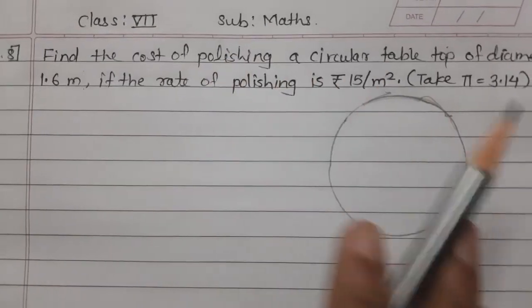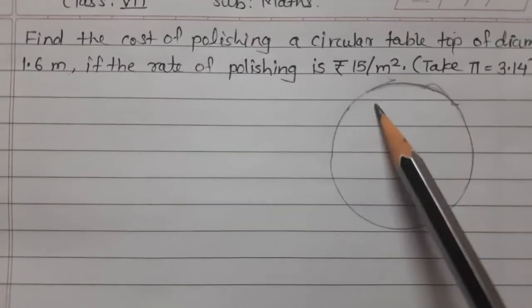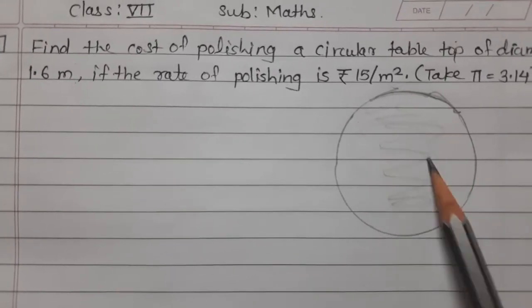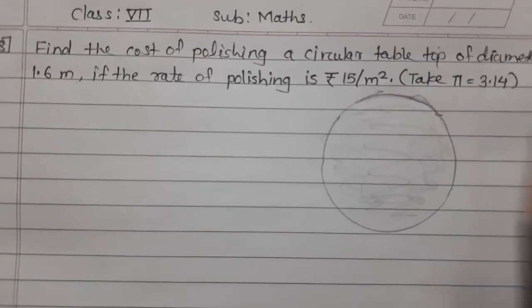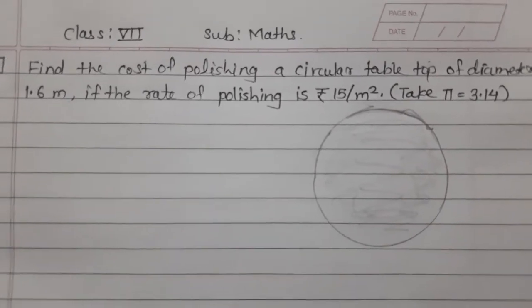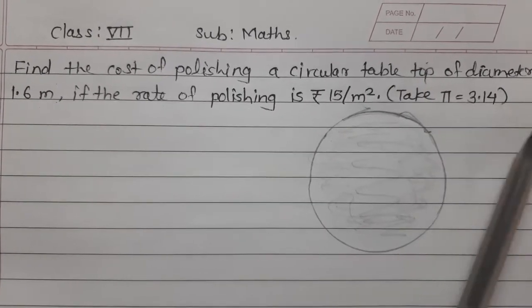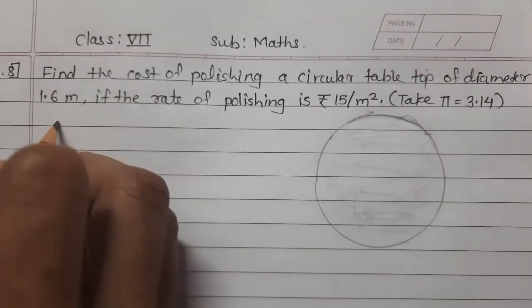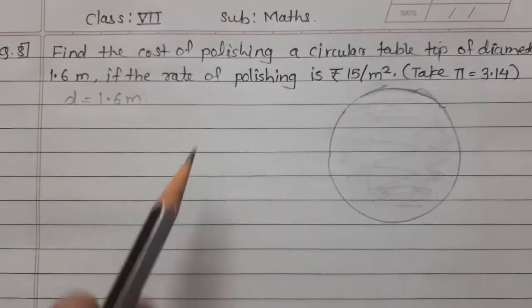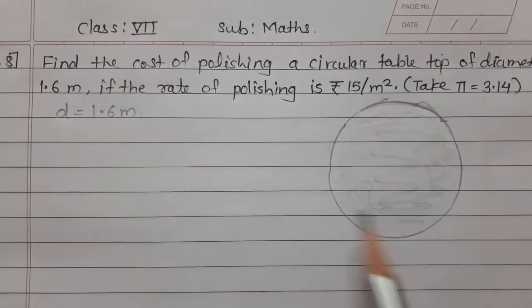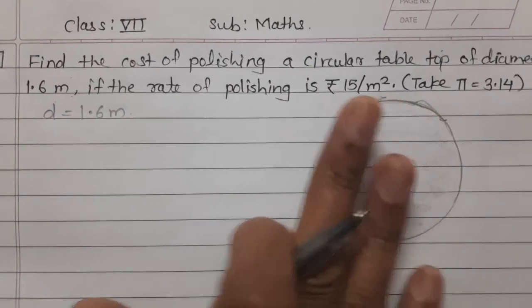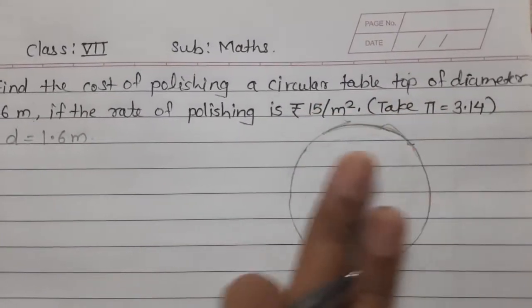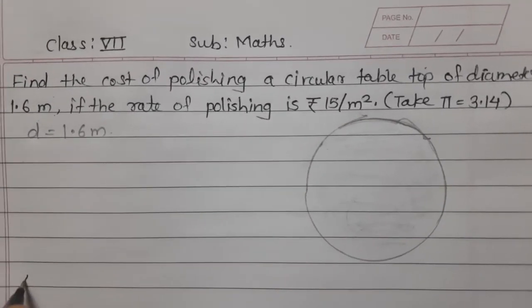Now see what is asked — find the cost of polishing a circular table top. This is the circular table top and we have to polish this table top. So we have to find the area of this circular table top.